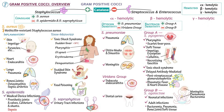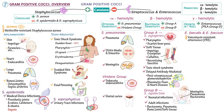Gamma-hemolytic bacteria that can grow in relatively high concentrations of salt and bile are categorized as Enterococcus. These bacteria were formerly categorized as group D streptococcus and are commonly commensals of the GI tract. Of particular concern are strains that are resistant to vancomycin, and enterococci are a significant cause of nosocomial, or hospital-acquired, infections.